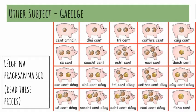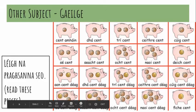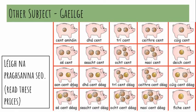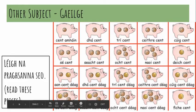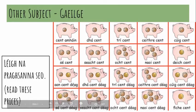Let's go on and do a few more. Aon cent déag — so, ein deg is eleven. In Irish, you put the cent in the middle. So it's aon cent déag.